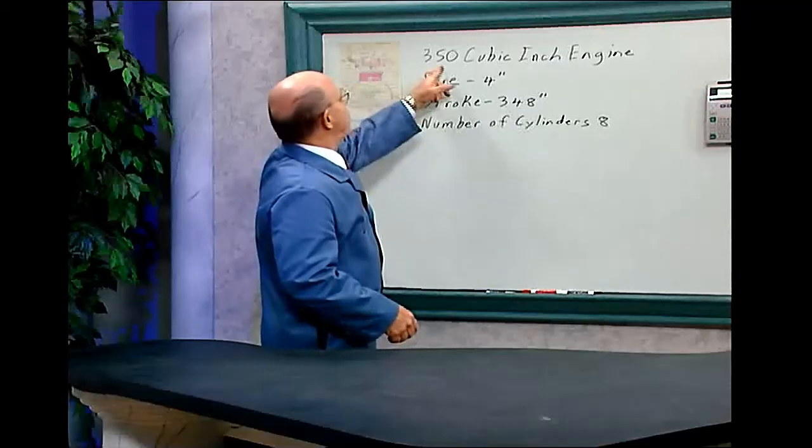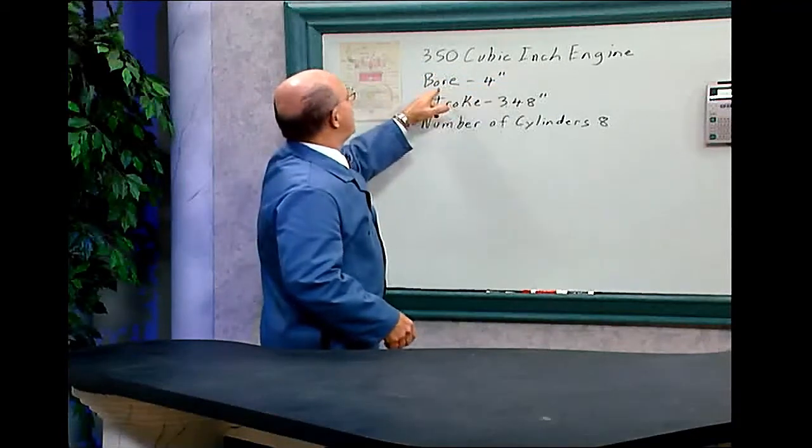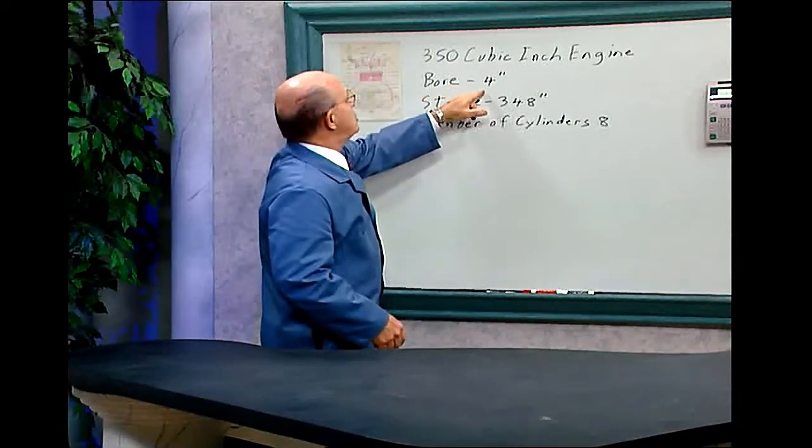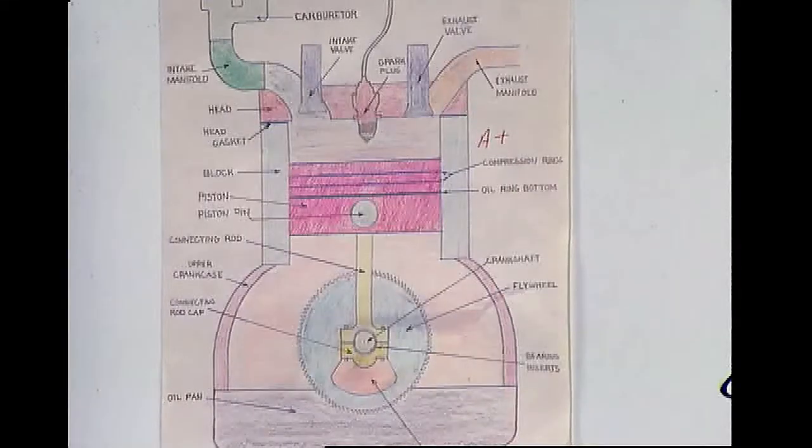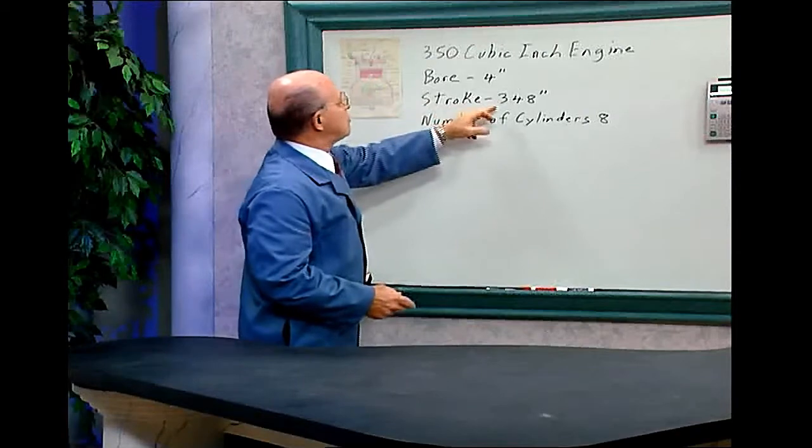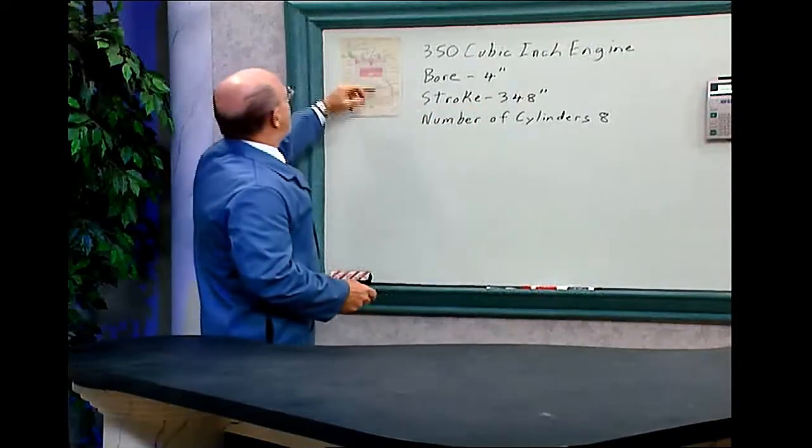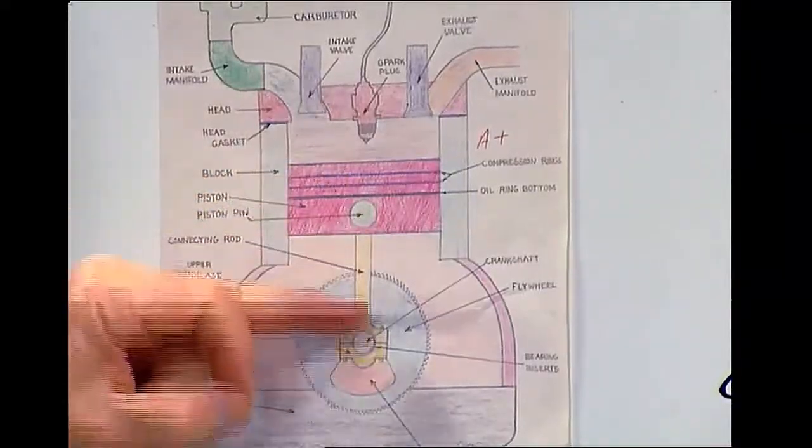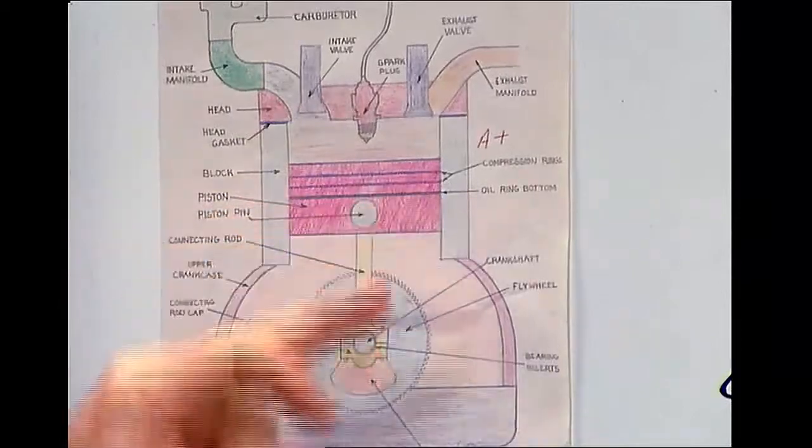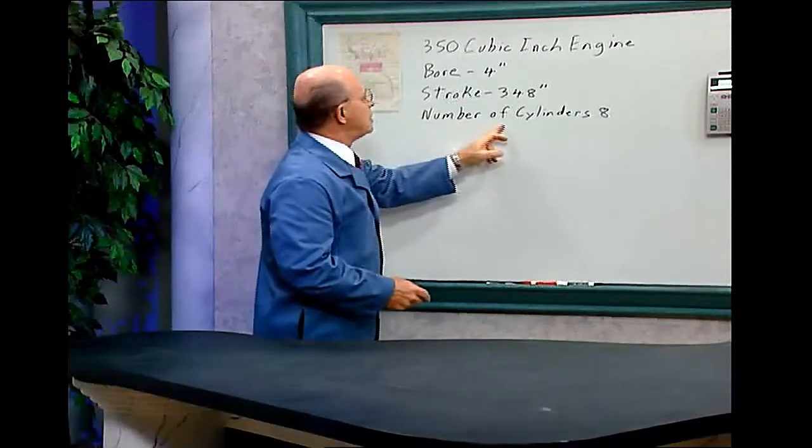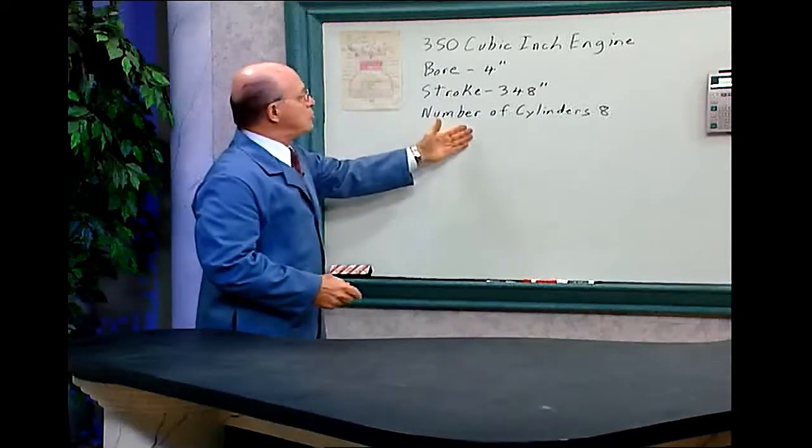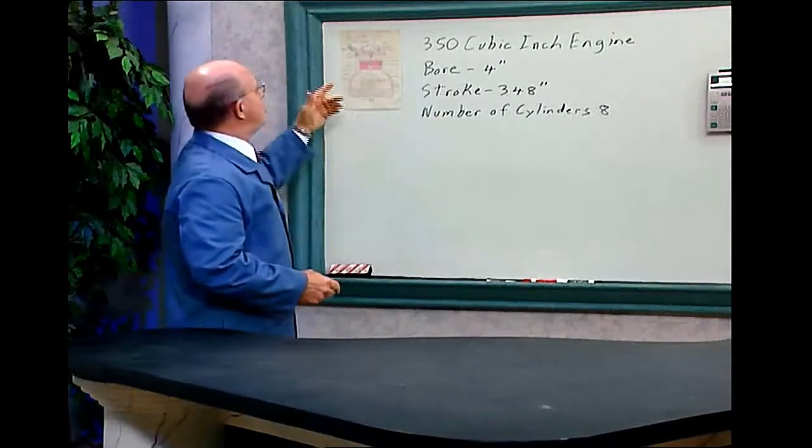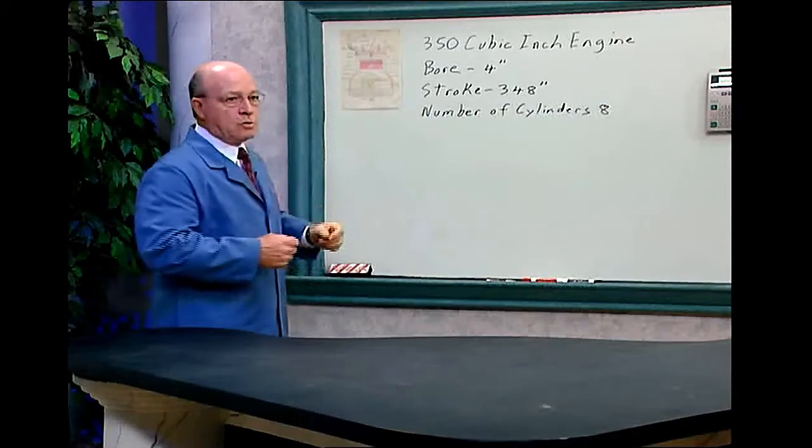First of all, a 350 cubic inch engine - the bore is 4 inches. That's the diameter of the cylinder shown up here. The stroke is 3.48 inches, and that means this piston goes up and down in this bore. The number of cylinders is 8 cylinders. But before we do the math, I'd like to explain a little bit how a 4-cycle engine works.